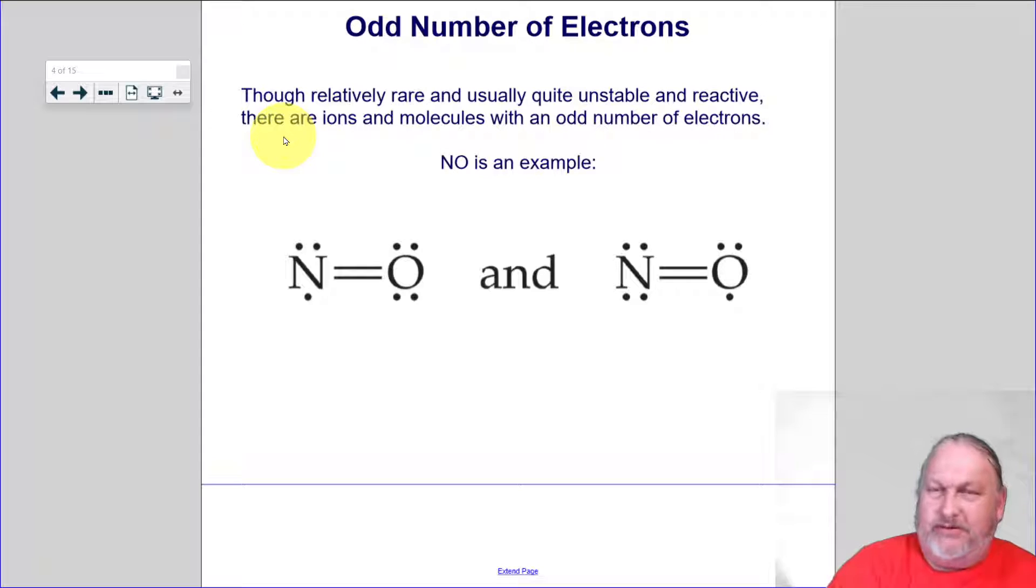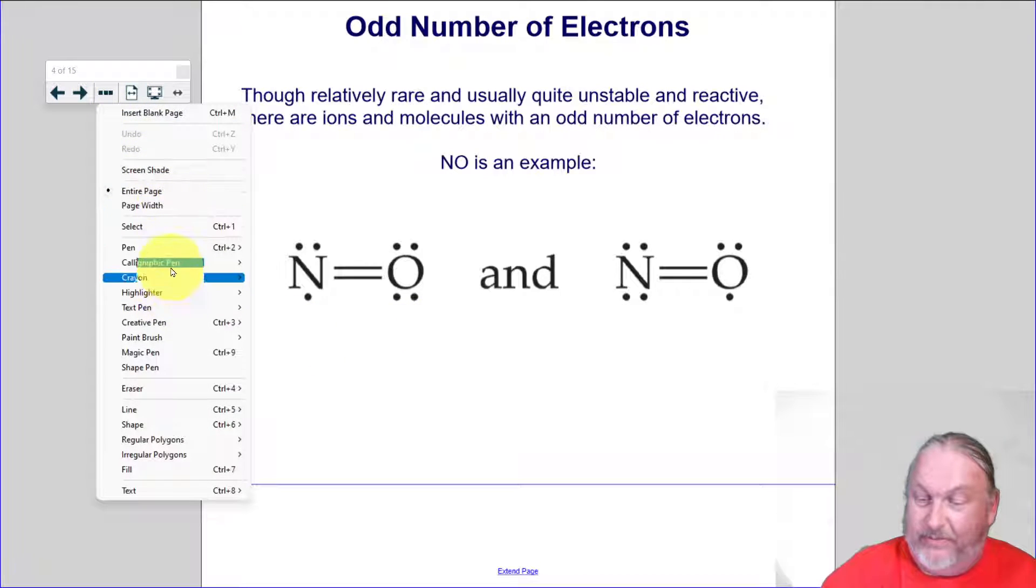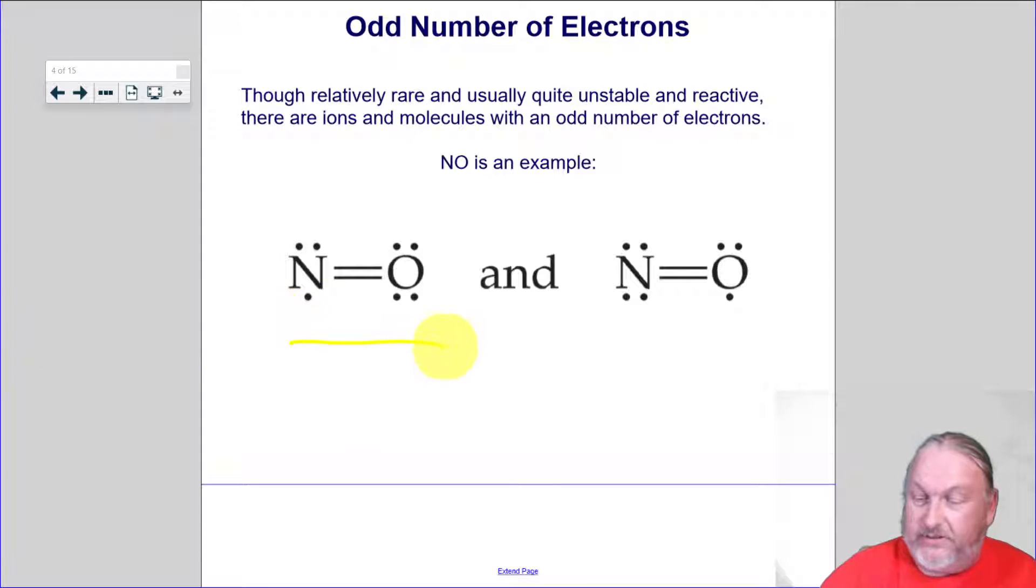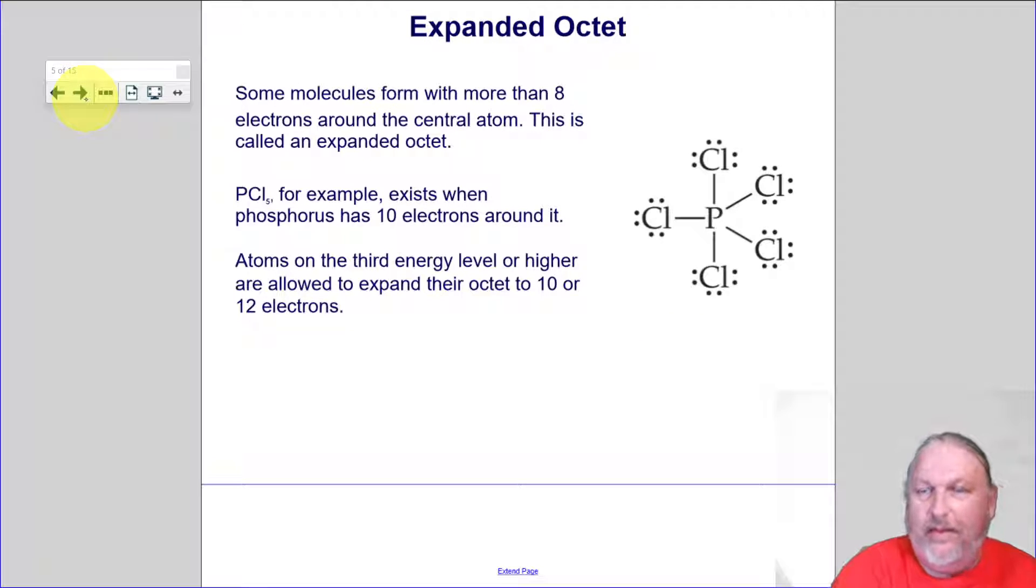And these are ions or molecules with an odd number of electrons. Nitrogen monoxide would be an example. If you look at its valence, you got five plus six, that's eleven. And that's how we would draw it. I mean, it's extremely, extremely, extremely weird. I think they use nitrogen monoxide in like jet fuel or something or rocket fuel. Weird stuff.